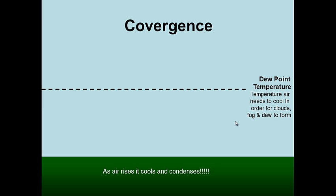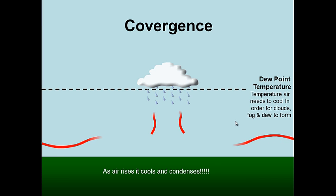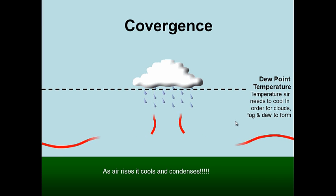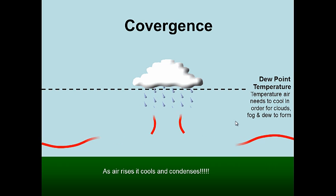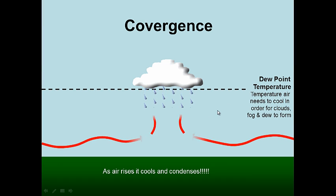Convergence — just like it sounds, the air collides. When two air masses collide, air goes straight up, and whenever air rises it cools and condenses, forming clouds. Convergence is therefore another way we get clouds, so long as the air rises above the dew point temperature.